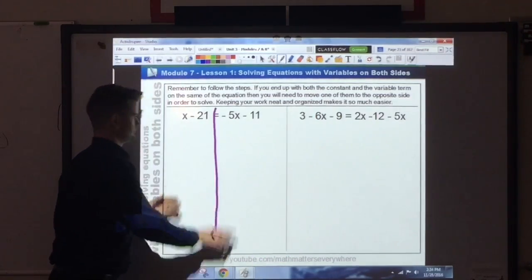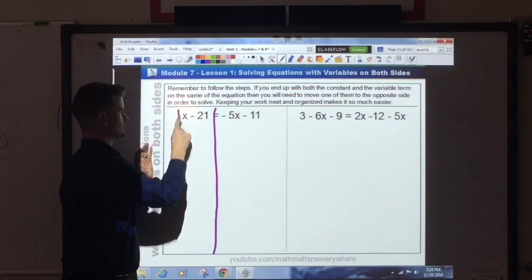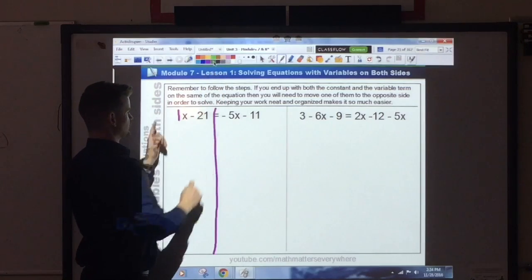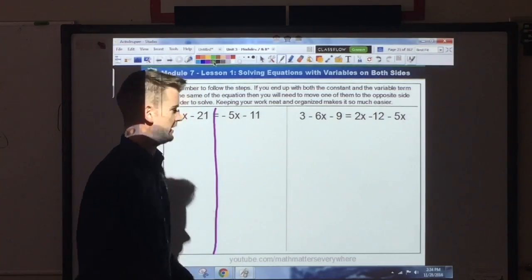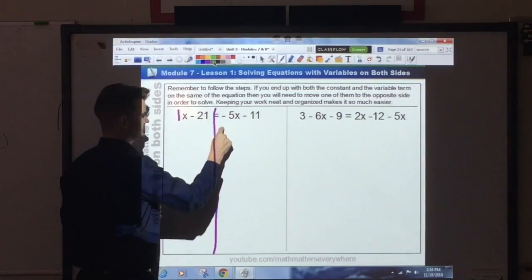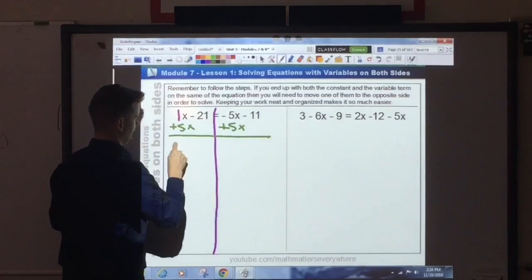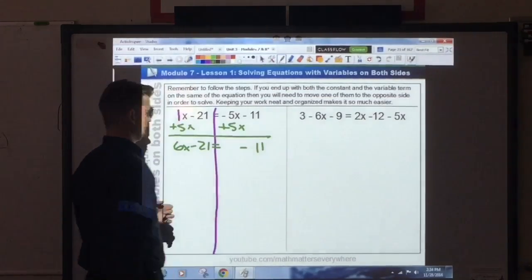Alright, so if I look at this one, there's no terms to combine here. But I should realize that this is not just x, it's 1x. Now that I'm at this point, I look at my coefficients. 1 and negative 5. Which one's smaller? Negative 5. Now, so I'm going to move this term over here so that all my variables are together. I add 5x to both sides, and I'll get 6x minus 21 is equal to negative 11.